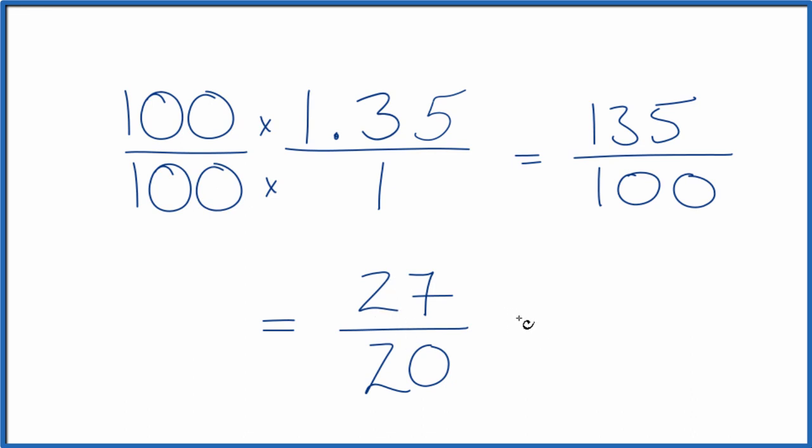This is an improper fraction because 27 is greater than 20. So let's convert it to a mixed number as well. 20 goes into 27 just one time with 7 left over. We bring this denominator across. And 27 over 20 equals 1 and 7 over 20, if you needed to write it as a mixed number.